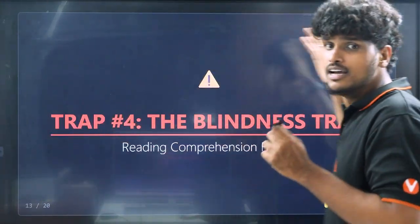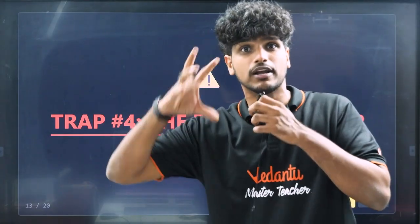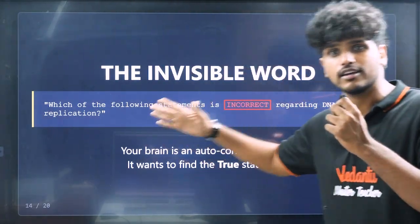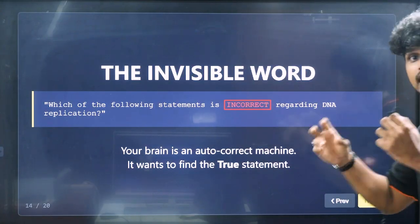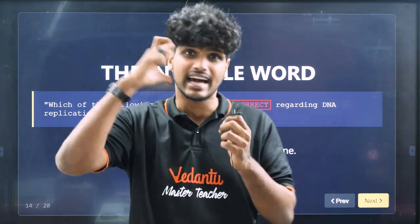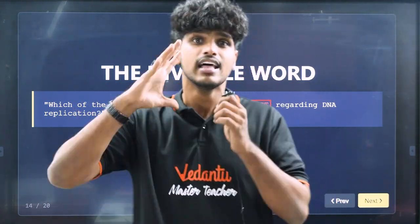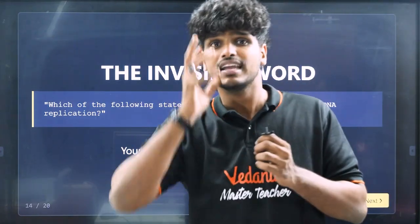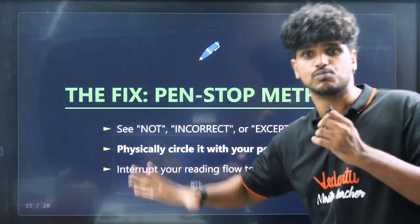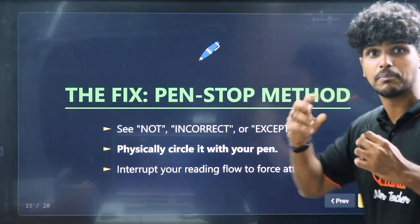Trap number 4 is Reading Comprehension Blindness. A question might ask: 'Which of the following statements is INCORRECT regarding DNA replication?' Students often miss the word 'incorrect' and answer for the correct statements instead. The strategy is to use the pen-stop method: circle or underline the key word — 'incorrect' — in your book before answering.